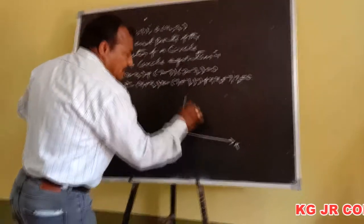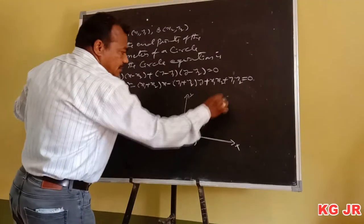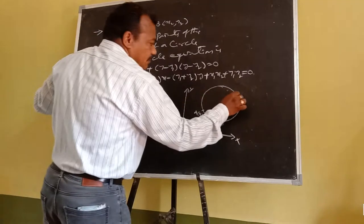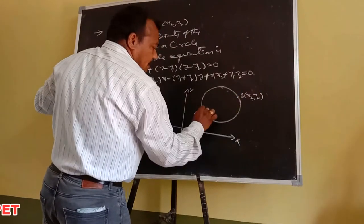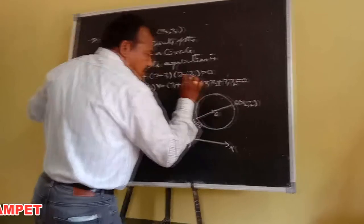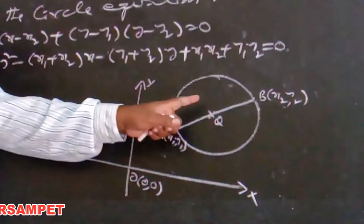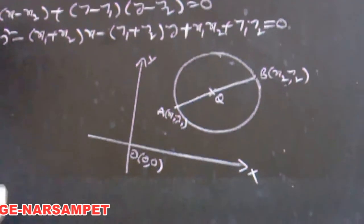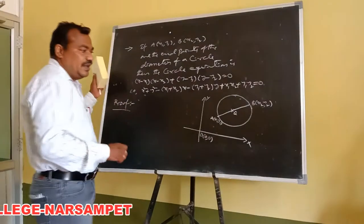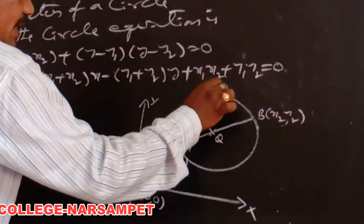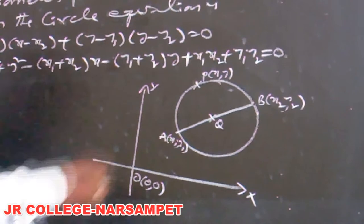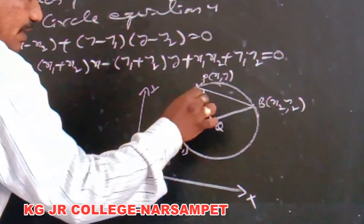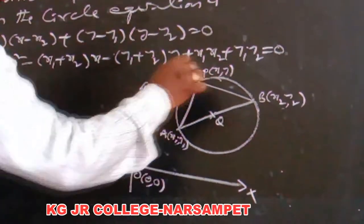Now this is the rough diagram. This is the x-axis and y-axis. Here this is the circle, and these are the end points of the diameter: A(x1, y1) and B(x2, y2). The diameter is passing through the center of the circle. The diameter divides the circle into equal parts; each part is a semicircle. In a semicircle, the angle is a right angle. Now taking a locus point P(x, y) on the circle, so AB subtends a right angle at P.